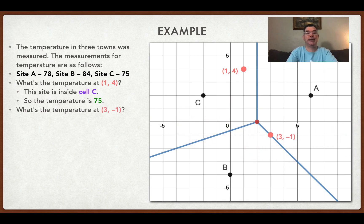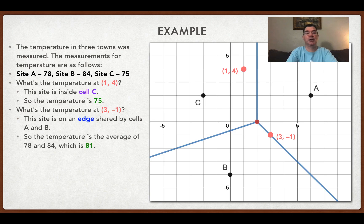If I look at the point (3, -1), that is not completely within one cell. It is on an edge between cells A and B. So what I do is find the average of the temperatures between those two sites, and use that as my temperature. So that is going to be a temperature of 81.